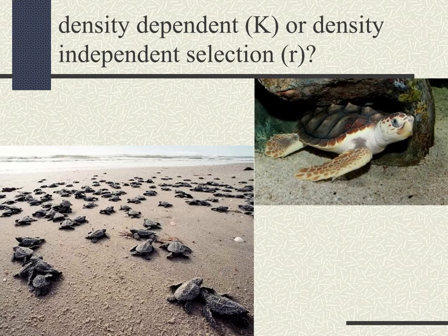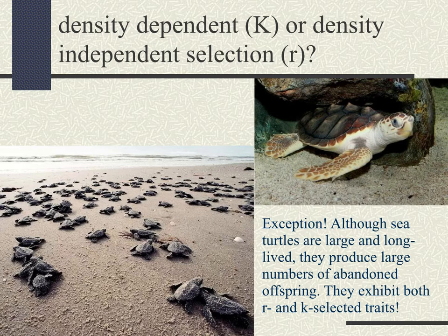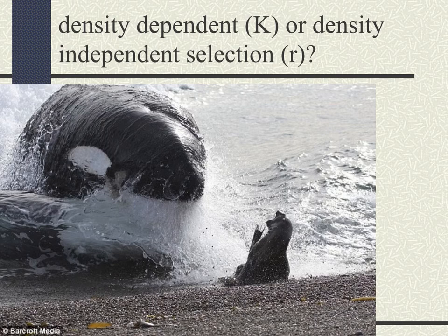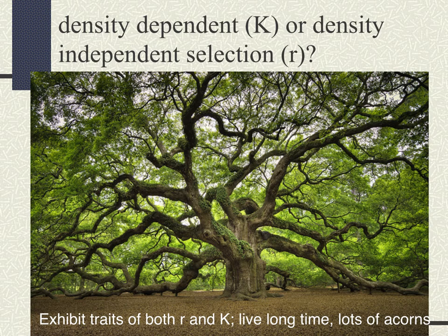Some species have exceptions and are combinations of both. Sea turtles are large and long-lived, but they produce many offspring whose survival rates are anywhere between one in a thousand to one in ten thousand actually making it to sexual maturity, which takes 30 years to reach. So sea turtles exhibit both R and K traits. Similarly, oak trees live a long time but reproduce by producing lots of acorns at once, which don't all survive — another example exhibiting both strategies.